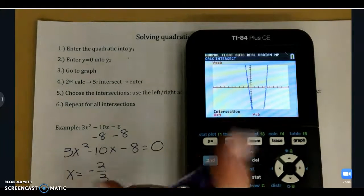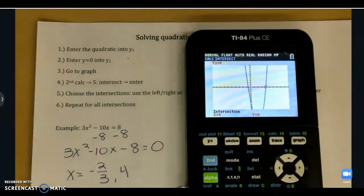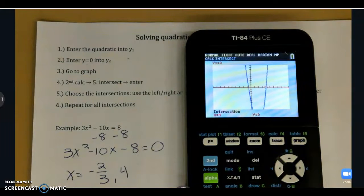And then our other intersection is at 4. So our solutions to that quadratic are negative 2 thirds and 4. And if you need to see that one more time, just replay the video.